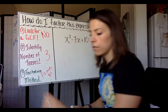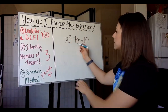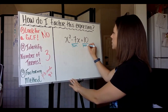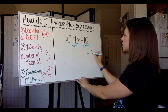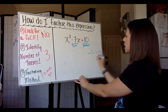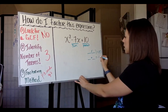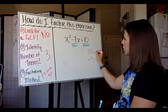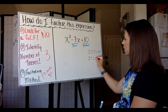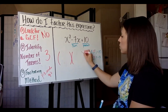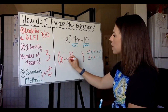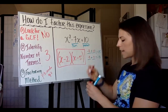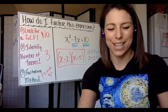To do P's and Q's, we find two numbers that have a sum of negative seven and a product of ten. What times what equals ten, that when added together gives negative seven? The numbers are negative two and negative five. So our final answer is a product of two binomials: x minus two times x minus five. That's factoring with P's and Q's.